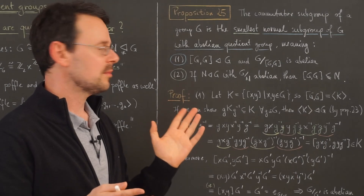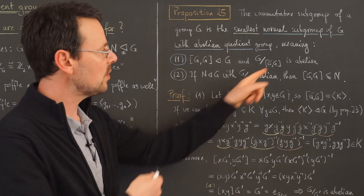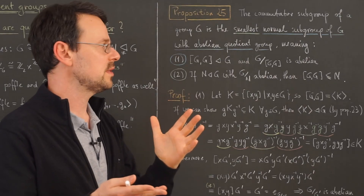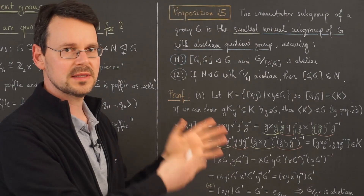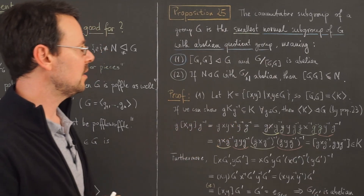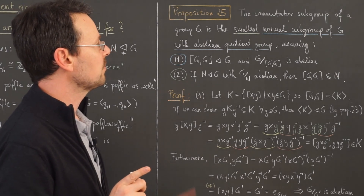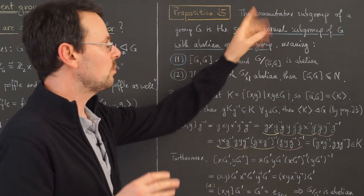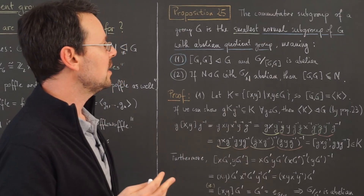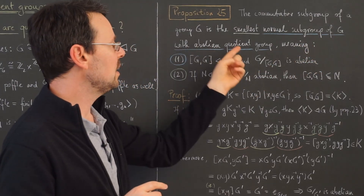Now comes the important concept of factoring something out. We just saw that the commutator subgroup measures how non-abelian the group is. So what would we expect if we factor this subgroup out? The result — the quotient group — should be abelian. And indeed it is, and even more. This is the content of Proposition 25. The commutator subgroup of a group G is the smallest normal subgroup of G with abelian quotient group.